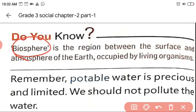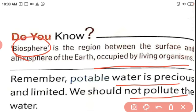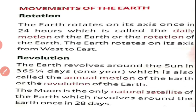The next one is biosphere. Biosphere is the place of living beings. The suitable place for a living being is one that consists of land, water, and air. That place, occupied by living organisms, is the biosphere. An important thing, children: water is a precious resource, so we should not pollute the water.